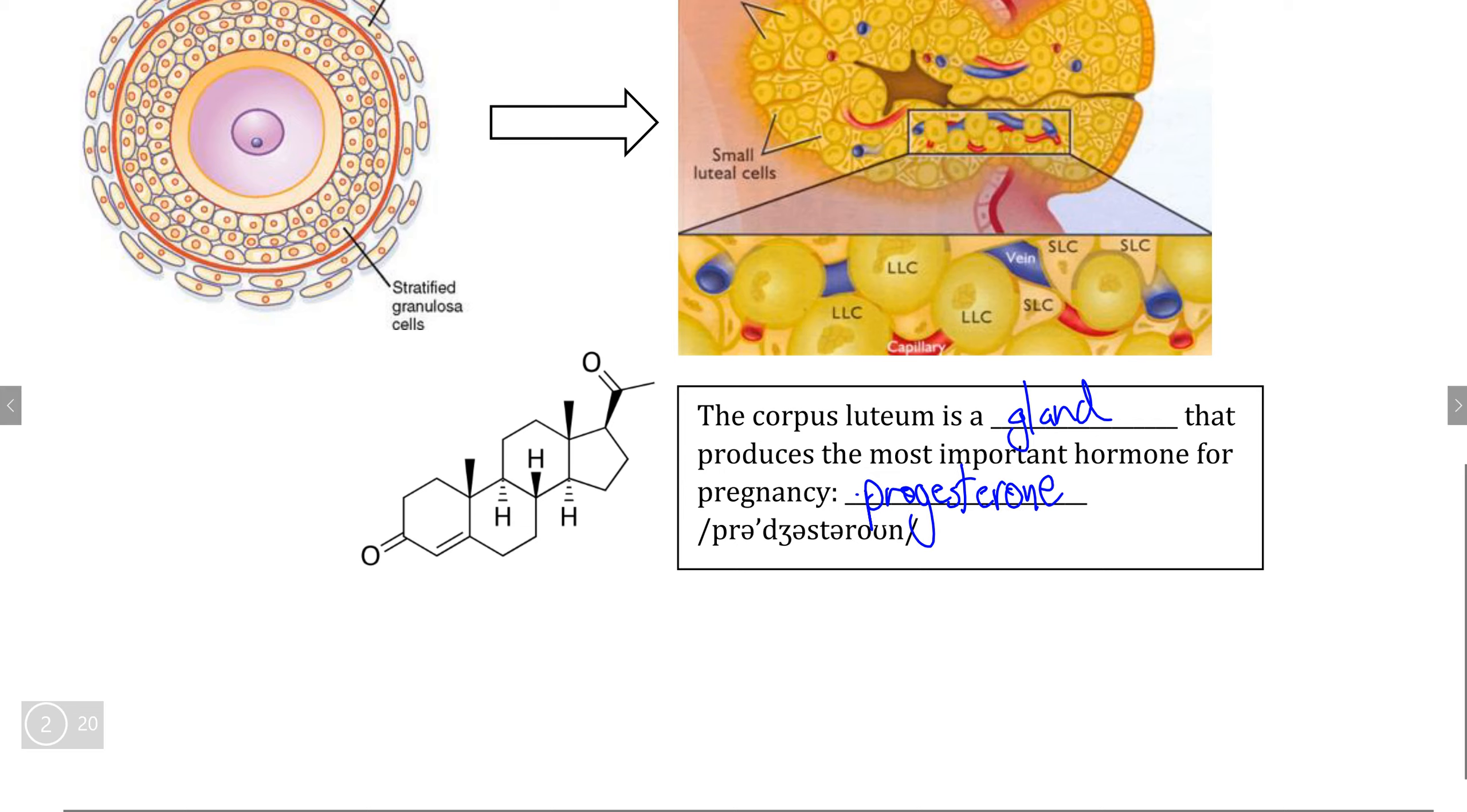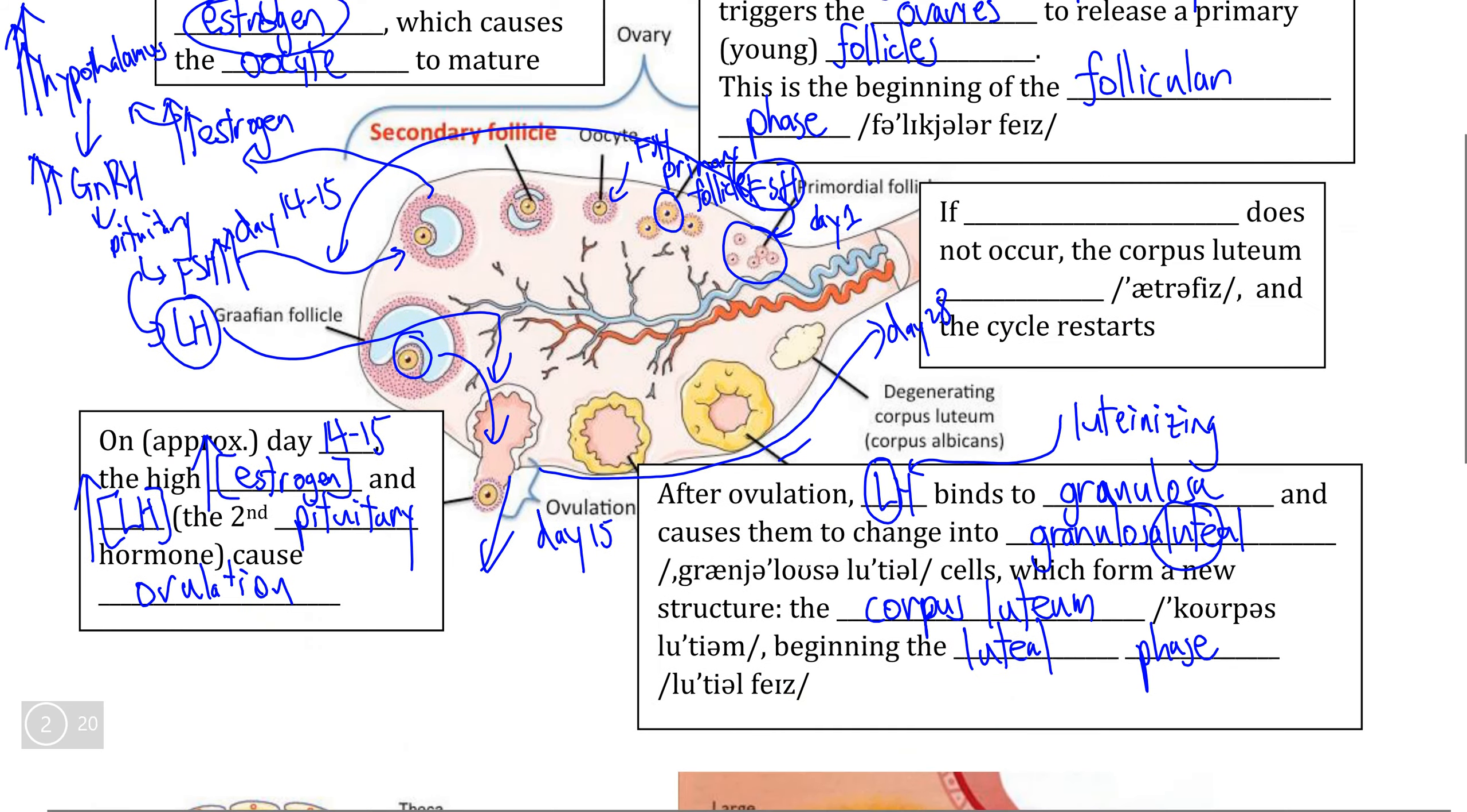As we'll see in the next video, progesterone is very important in causing the uterus to become mature and allowing it to receive a fertilized ovum. However,